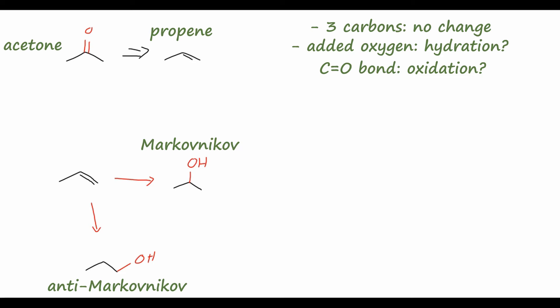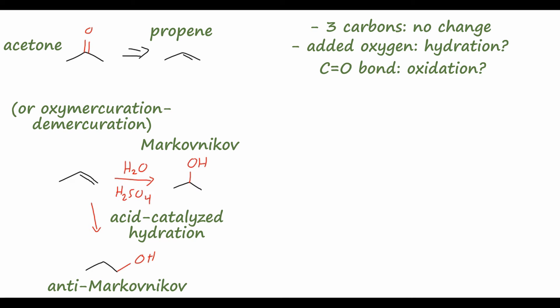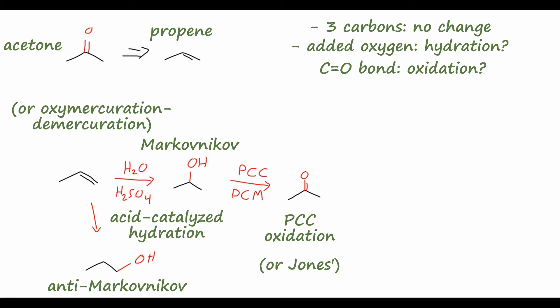A couple of ways to get that Markovnikov product: we could use water in dilute sulfuric acid for acid-catalyzed hydration of the double bond. We could also use oxymercuration-demercuration — mercury(II) acetate in water followed by sodium borohydride as a reductive workup — to give us the Markovnikov alcohol, isopropyl alcohol. Then to form the carbon-oxygen double bond, we oxidize this alcohol to a ketone using PCC (pyridinium chlorochromate) in dichloromethane, or the Jones oxidation — dichromate in sulfuric acid and water — to give us acetone.